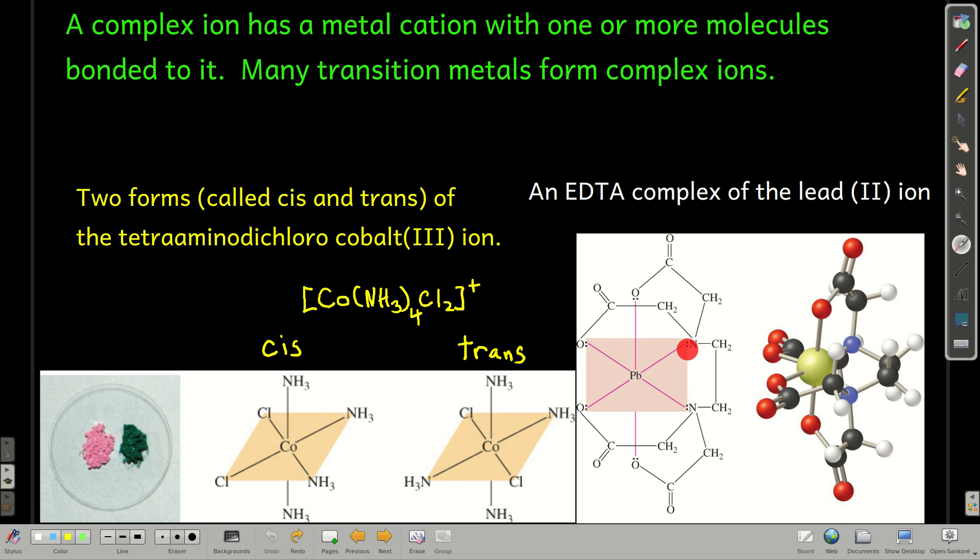This one here is an EDTA, or ethylenediaminotetraacetic acid complex of the lead(II) ion. So lead(II) is in the middle, and we have these molecules that are called EDTA bonded to them. So those are just some examples of some complex ions. Now let's see what we can do with them.